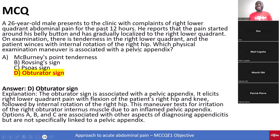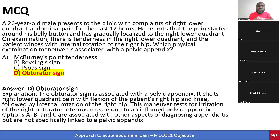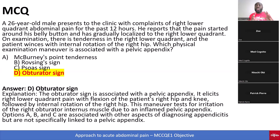For pelvic appendix, the answer is obturator sign. The obturator sign is associated with the pelvic appendix. It elicits right lower quadrant pain with flexion of the patient's hip and knee, followed by internal rotation of the right hip. This maneuver tests for irritation of the right obturator internus muscle due to an inflamed pelvic appendix. You need to know McBurney's point tenderness, Rovsing's sign, Psoas sign, and obturator sign, and you need to know them as they can be described for you.